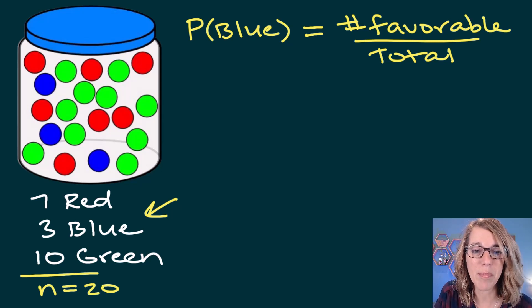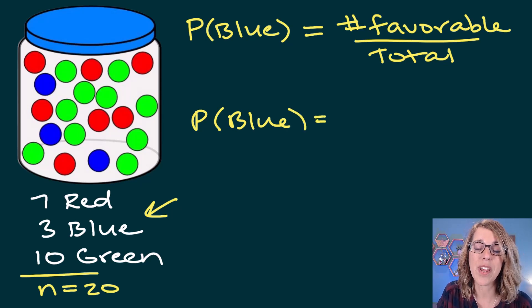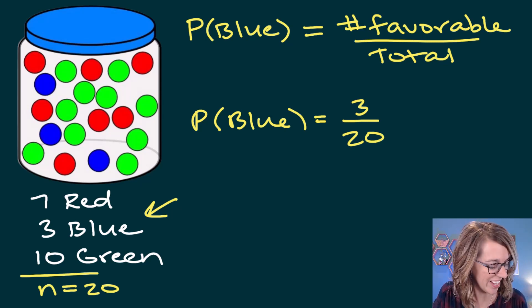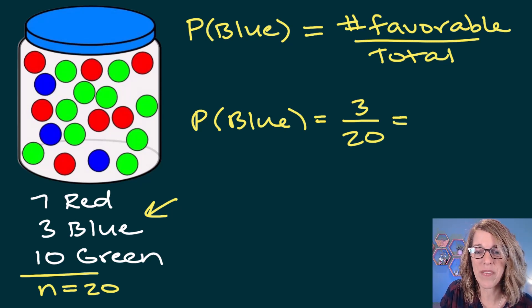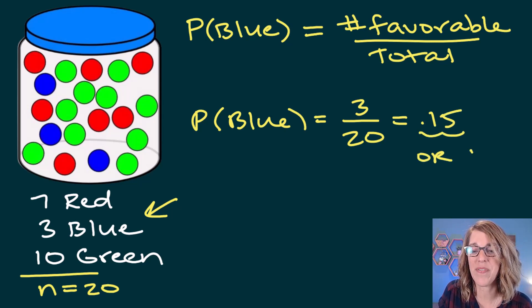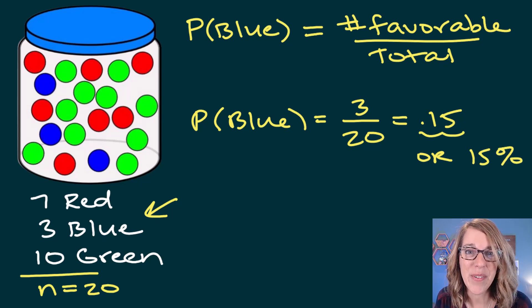Putting my probability together, the probability of drawing one blue marble equals the number of favorable ways. There are three blue marbles I could draw from, divided by the total number of marbles, which is 20. If I divide that in my calculator, I get 0.15, or 15%. Let's do another one.